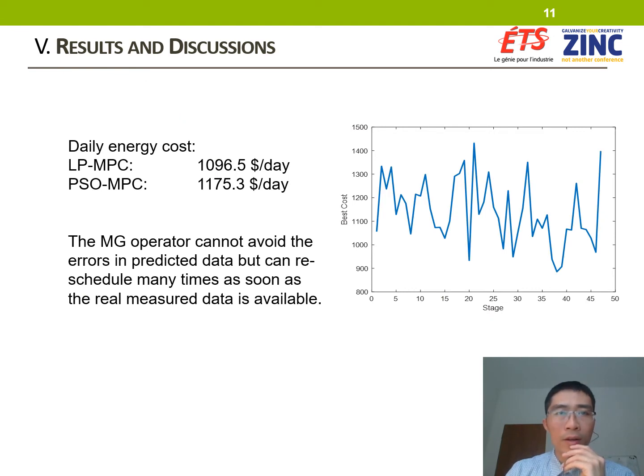Even though the daily energy cost achieved by PSO-MPC is worse than LP-MPC, it is quite close. This is because LP-MPC achieves the exact global optimum, while PSO can only obtain as close as possible to the global optimum, and because of some differences in forecast data running in simulation cases.